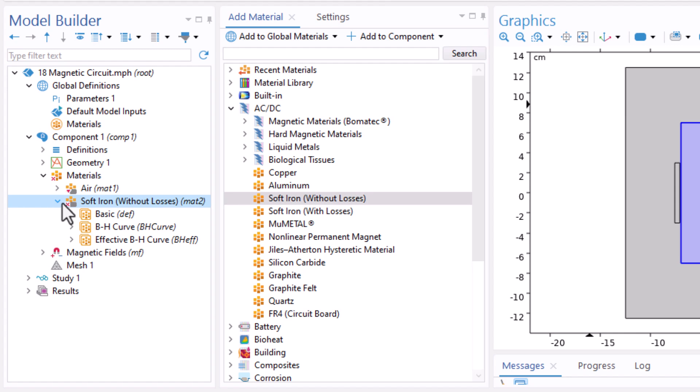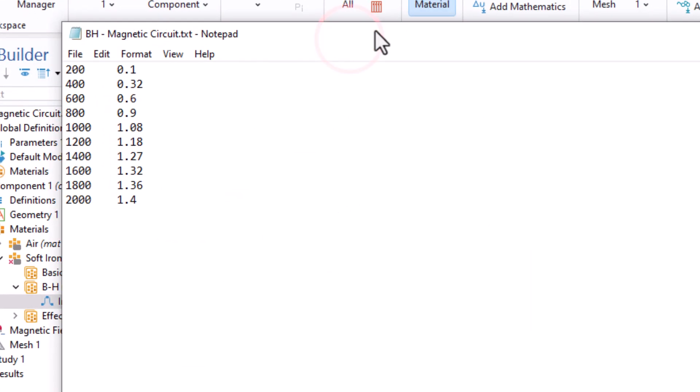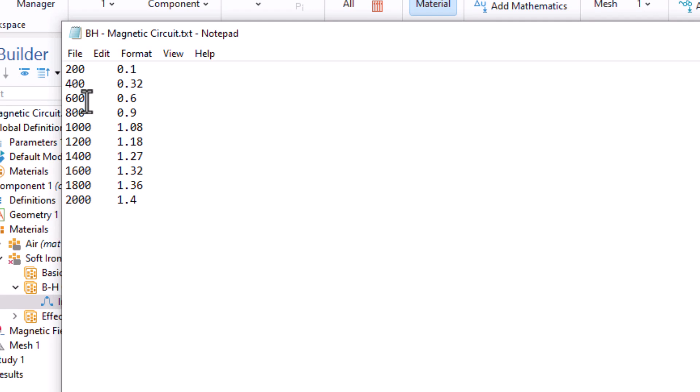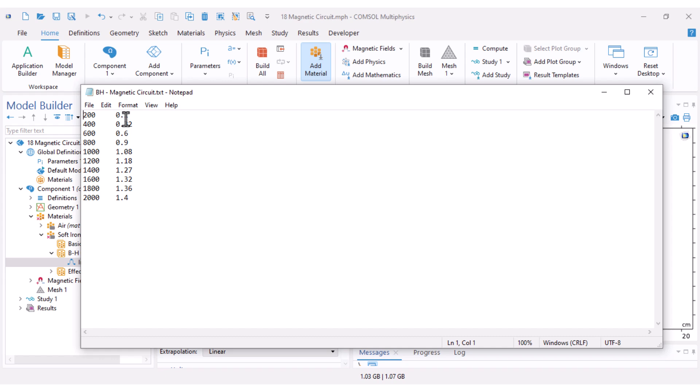Under AC/DC I double click soft iron without loss and then assign it to the core region. If you open the soft iron tree you can see the BH curve interpolation. However, the default BH curve isn't the one we need for our problem.